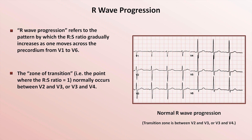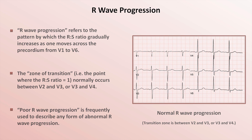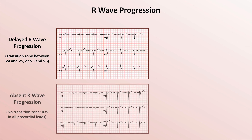Here's an example of normal R-wave progression. The term poor R-wave progression is frequently used to nonspecifically describe any form of abnormal progression. Progression may be abnormal because it's delayed — that is, the transition zone is between V4 and V5, or between V5 and V6. Alternatively, R-wave progression may be said to be absent, in which there is no transition zone at all in the conventional 12-lead EKG; that is, the R-wave is shorter than the S-wave is deep in all precordial leads.